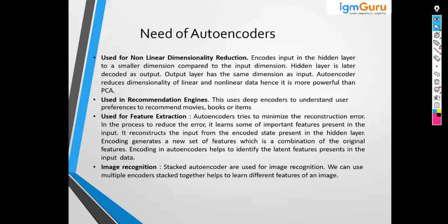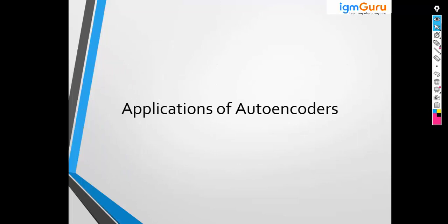Why do we need encoders? One example is dimensionality reduction. Another example is that you can use autoencoders for recommendation engines. You can also use autoencoders for feature extraction, and they can be used for image recognition as well.